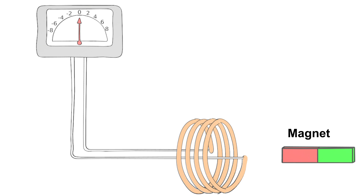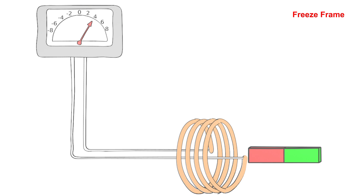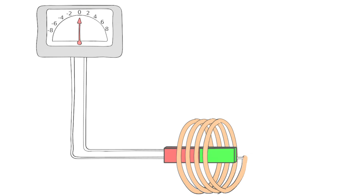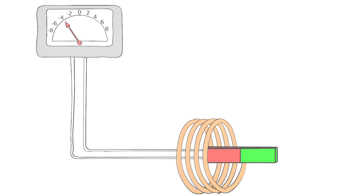If the bar magnet is approached to the coil, the pointer of the voltmeter deflects. However, as soon as the bar magnet stops moving, the deflection on the voltmeter will decrease. If you remove the bar magnet from the coil, the pointer of the voltmeter deflects again, but this time in the other direction.